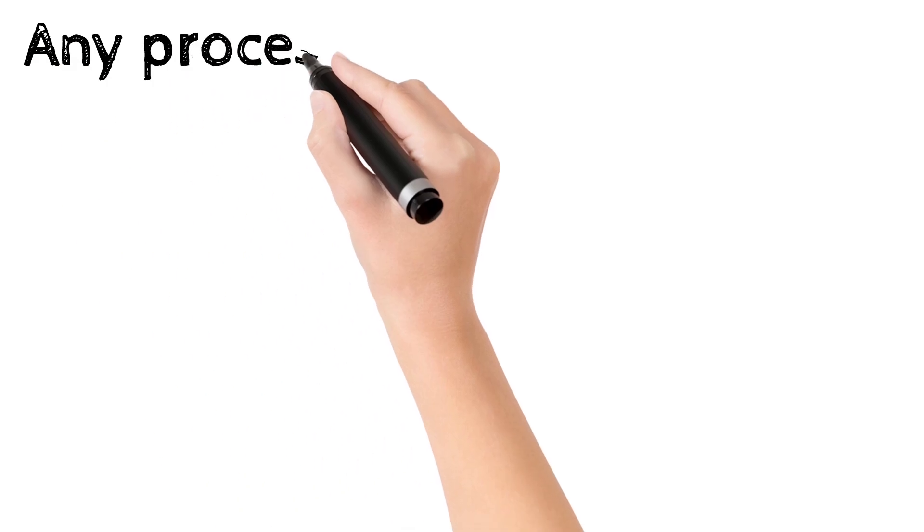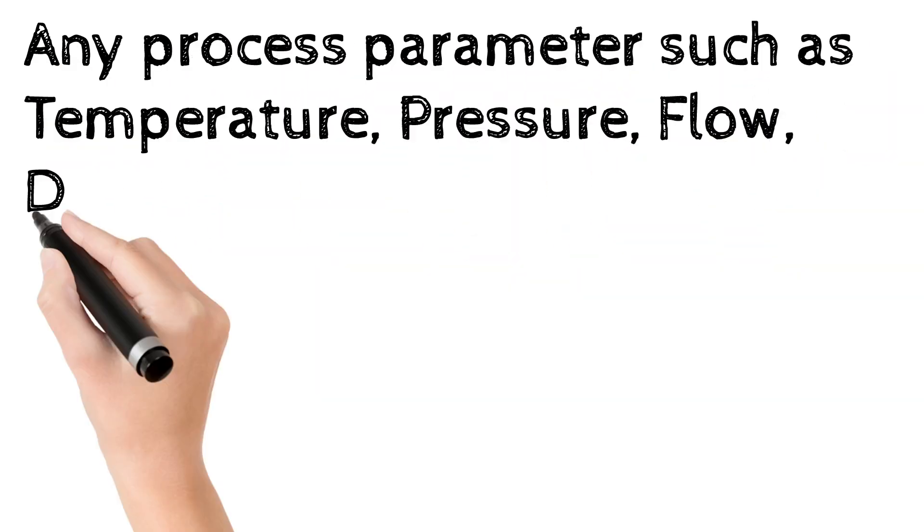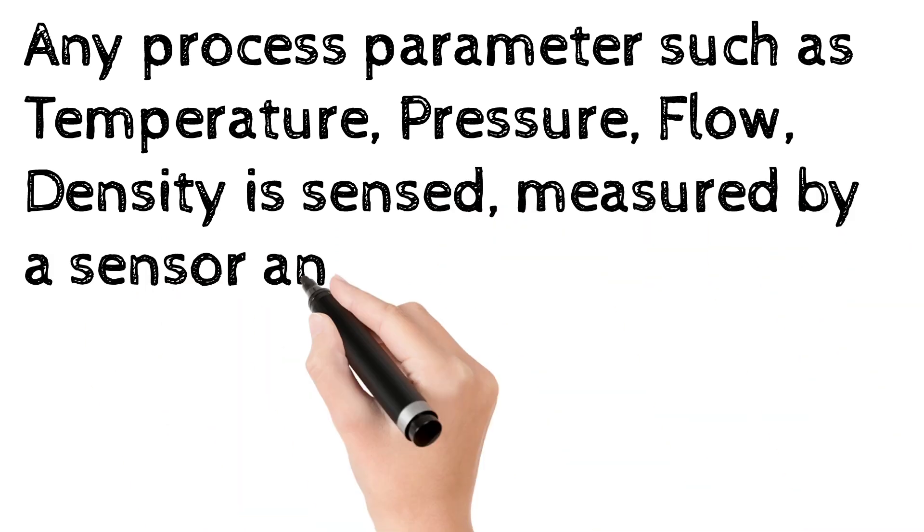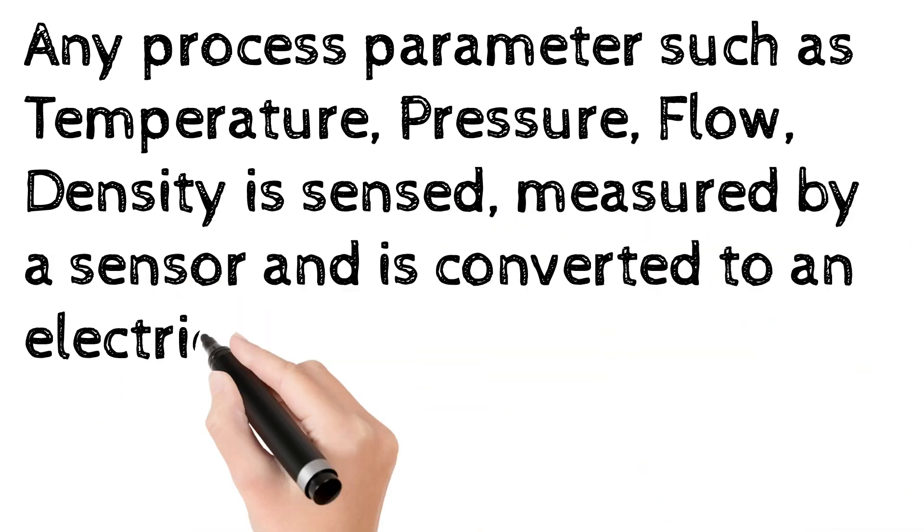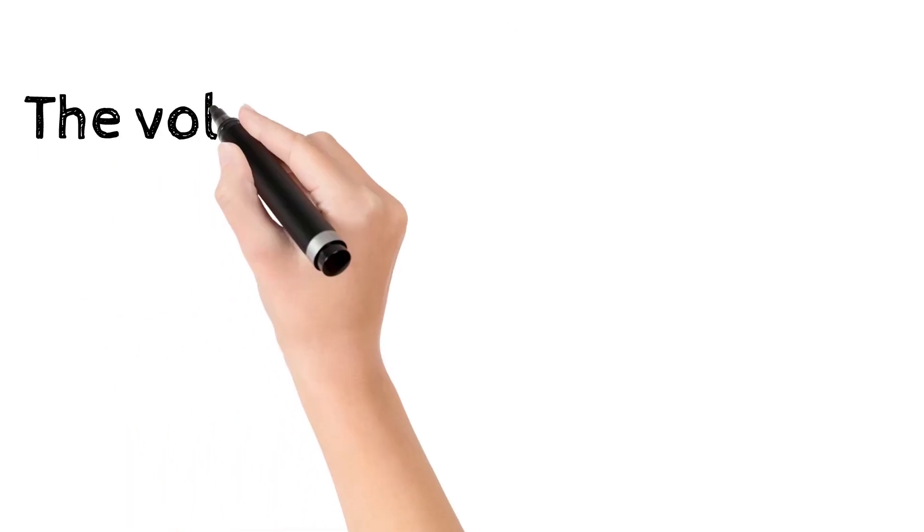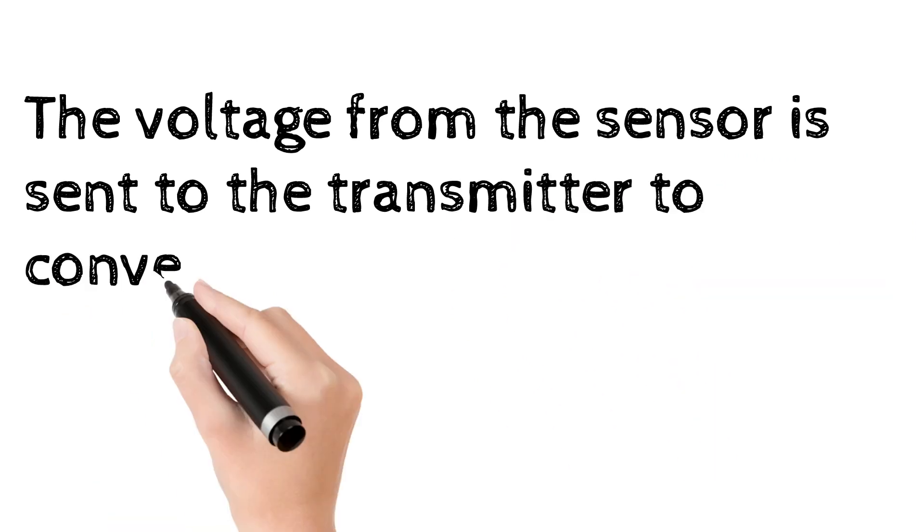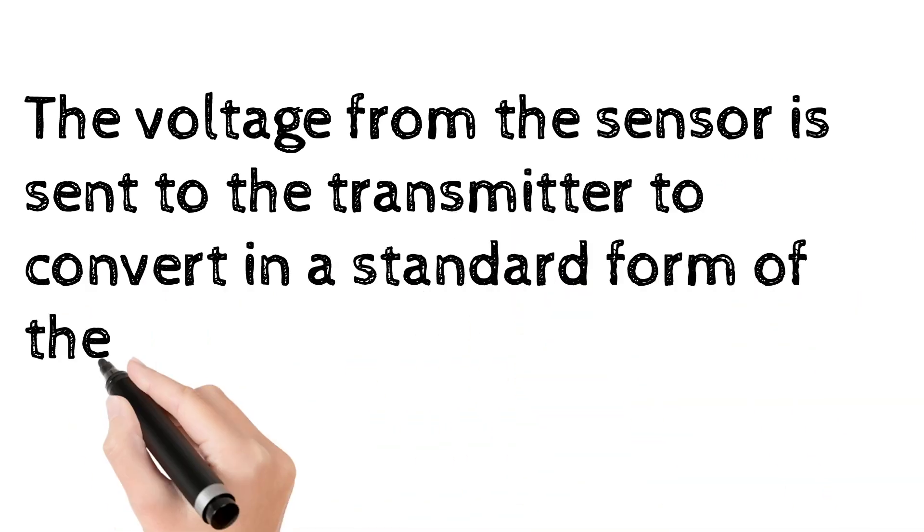Any process parameter such as temperature, pressure, flow, density is sensed, measured by a sensor and is converted to an electrical signal in the form of voltage. The voltage from the sensor is sent to the transmitter to convert in a standard form of the current output signal.